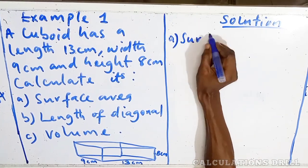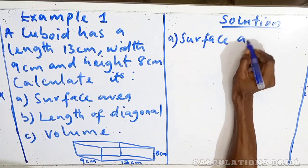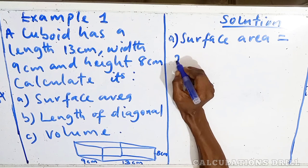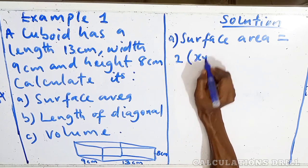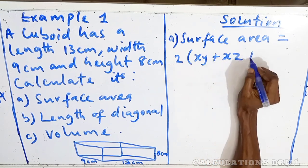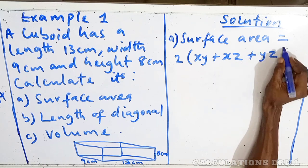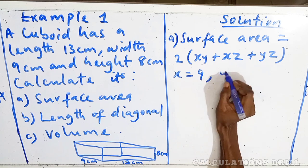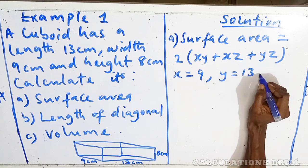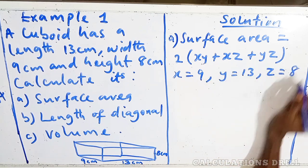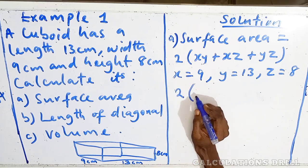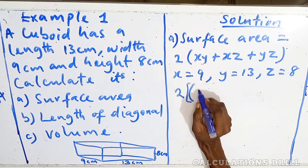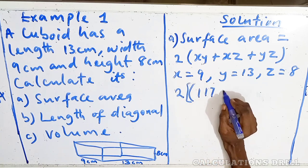And the formula for surface area is equal to 2(xy + xz + yz). Then, x is equal to 9, y is equal to 13, and z is equal to 8. 2 into bracket, 9 times 13, and that will give us 117. That's what you can see there. Then, 9 times 8, that will give us 72. And 13 times 8, 104.